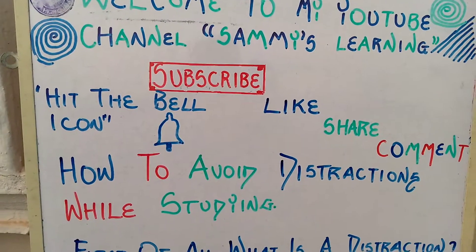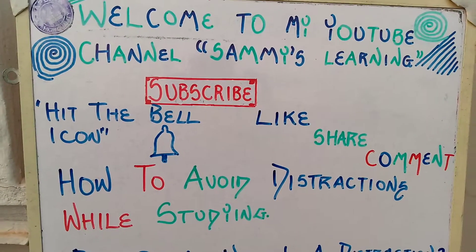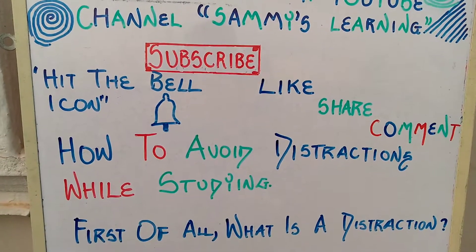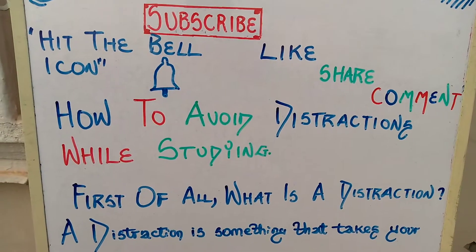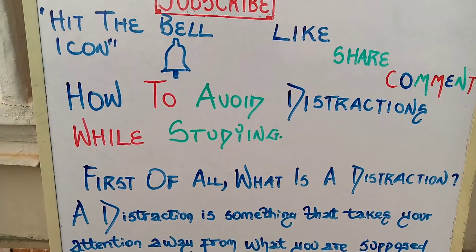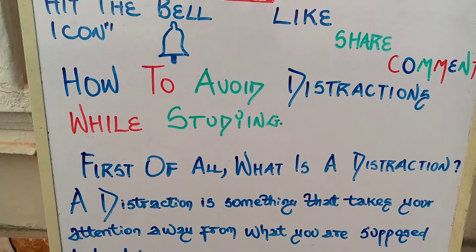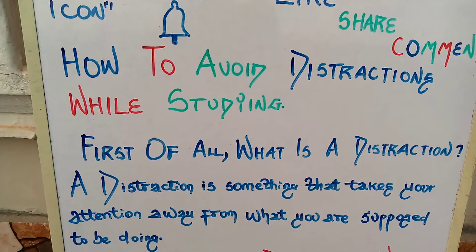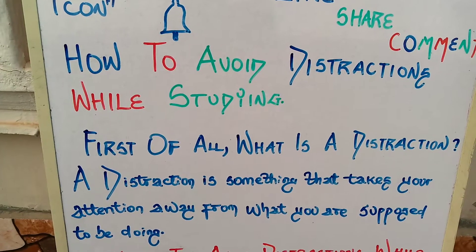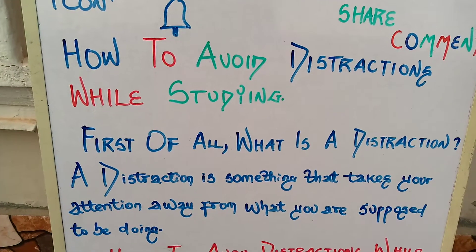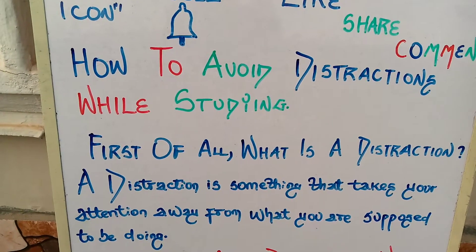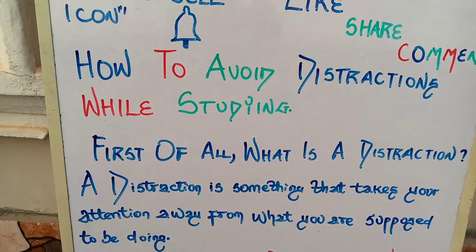But before we go into that, let's first check the meaning of distraction. What is a distraction? A distraction is something that takes your attention — your mind — away from what you are supposed to be doing. So without wasting much of your time, let's go into what we have for today.